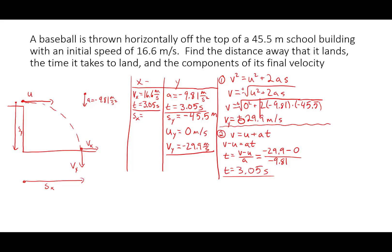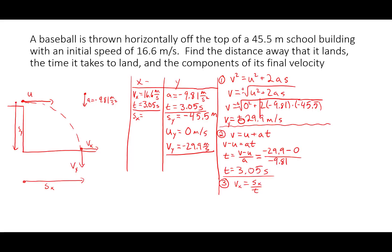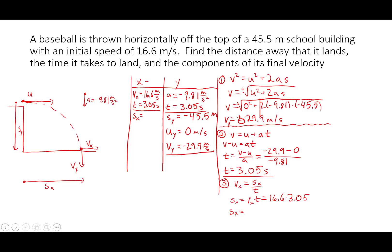Now I can solve for the displacement in the x direction — that's the distance it travels horizontally. It's constant velocity, so vx equals sx over t, which means sx equals velocity times time. That's 16.6 meters per second times 3.05, so sx equals 50.6 meters.